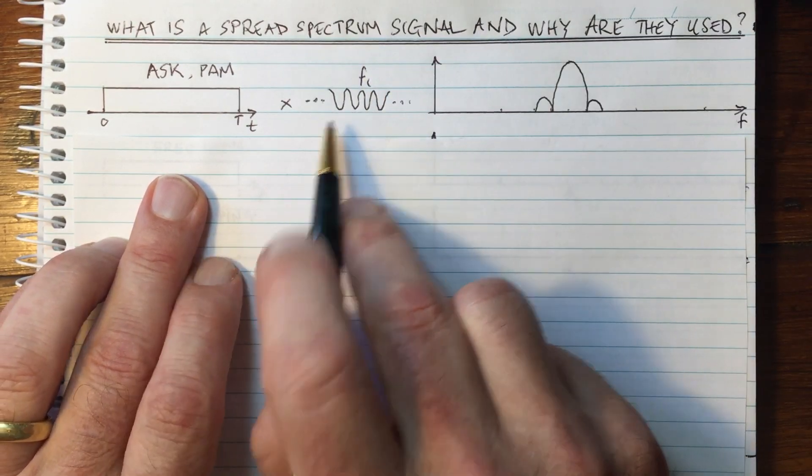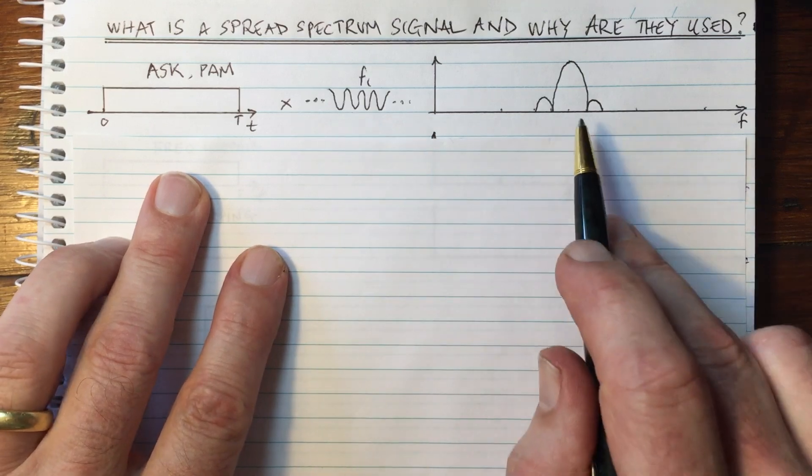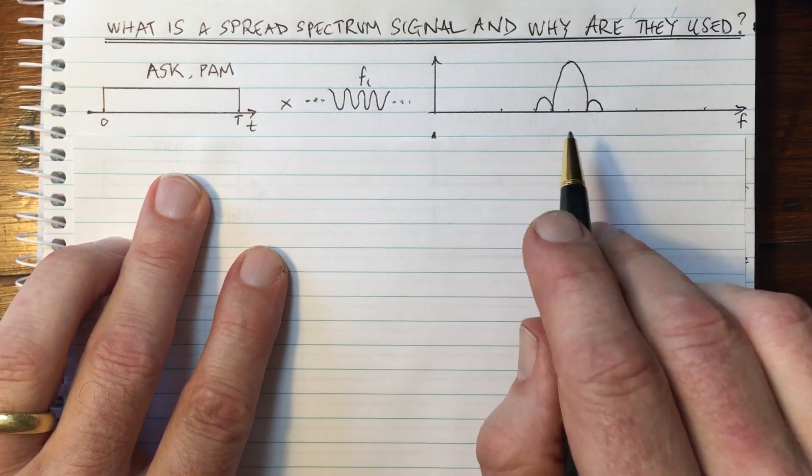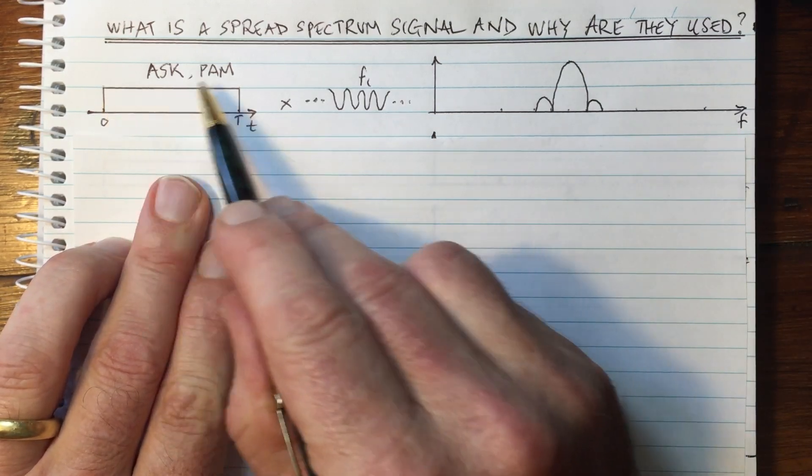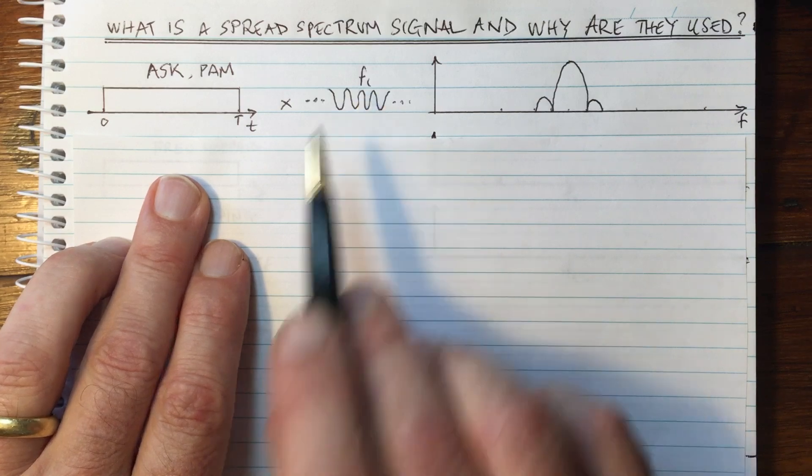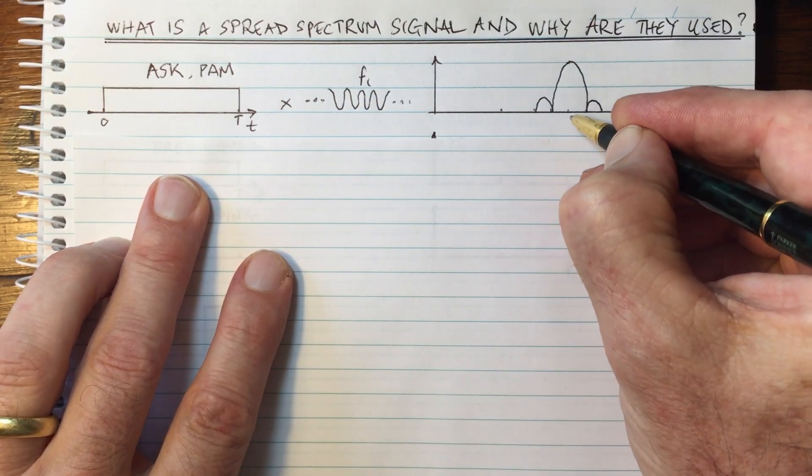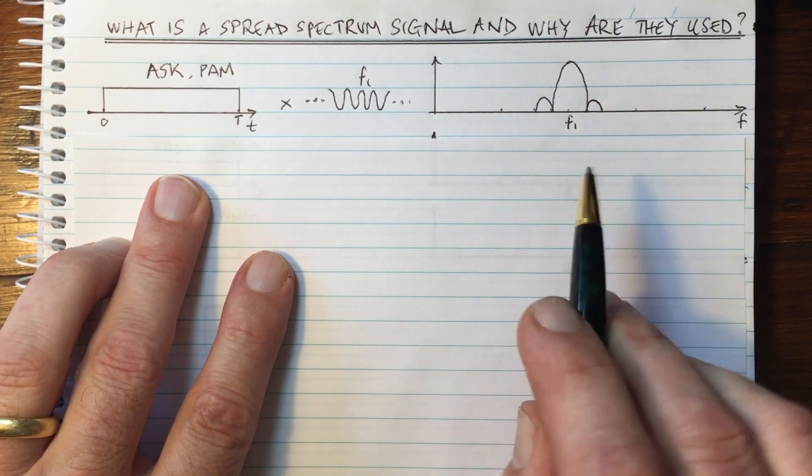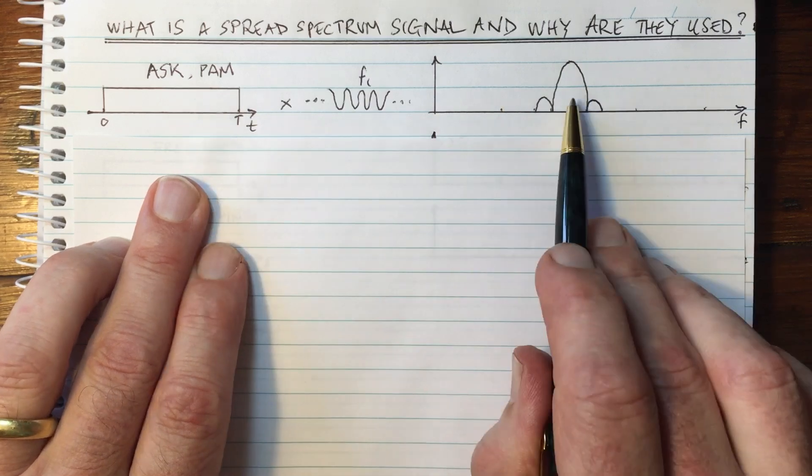And what does that mean when we multiply in the time domain? It means in the frequency domain, we're going to have the Fourier transform of this square appearing centered at the frequency of that carrier. So here we have F1, the Fourier transform of a square is a sinc function.